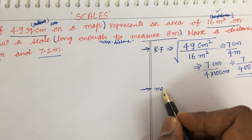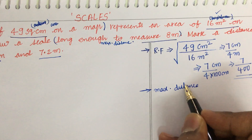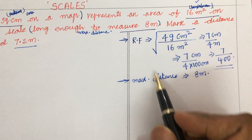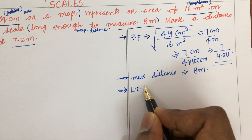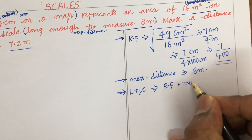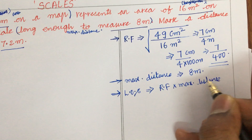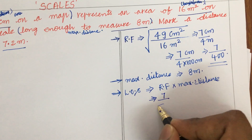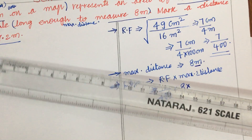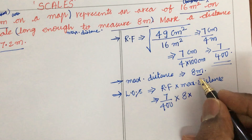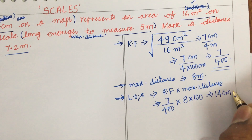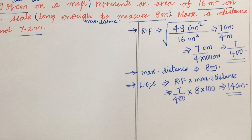Now we work out the maximum distance. The length of the scale is given as RF multiplied by the maximum distance. RF is 7/400 and the maximum distance is 8 meters, which we convert to 800 centimeters. So the length of the scale = 7/400 × 800 = 14 centimeters. Please work this out on your calculator, and do not forget to bring your calculator to the Engineering Graphics examination.